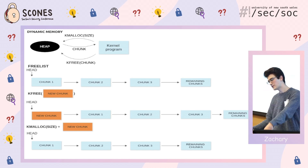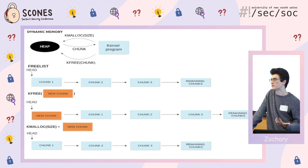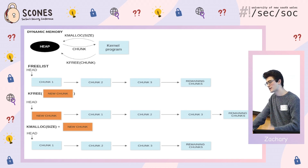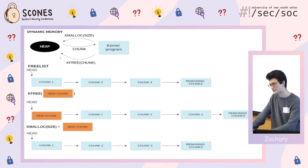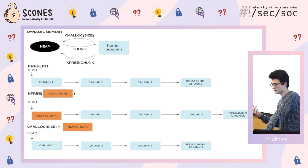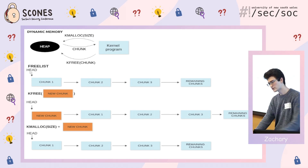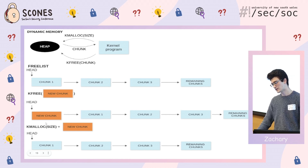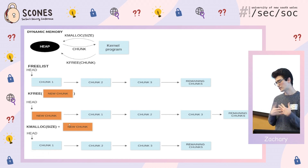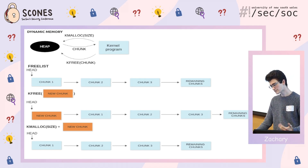Next is heap exploitation. The heap is another section of memory used for dynamic memory allocation at runtime. The kernel has its own special heap — kernel programs request memory via `kmalloc`, which returns a chunk, and return it with `kfree`. The heap tracks available memory using a free list — a linked list of free chunks. The free list head is the chunk returned on the next allocation. When `kfree` is called, the chunk is prepended to the free list; when allocated, the head chunk is returned. This makes the kernel heap a last-in, first-out structure.